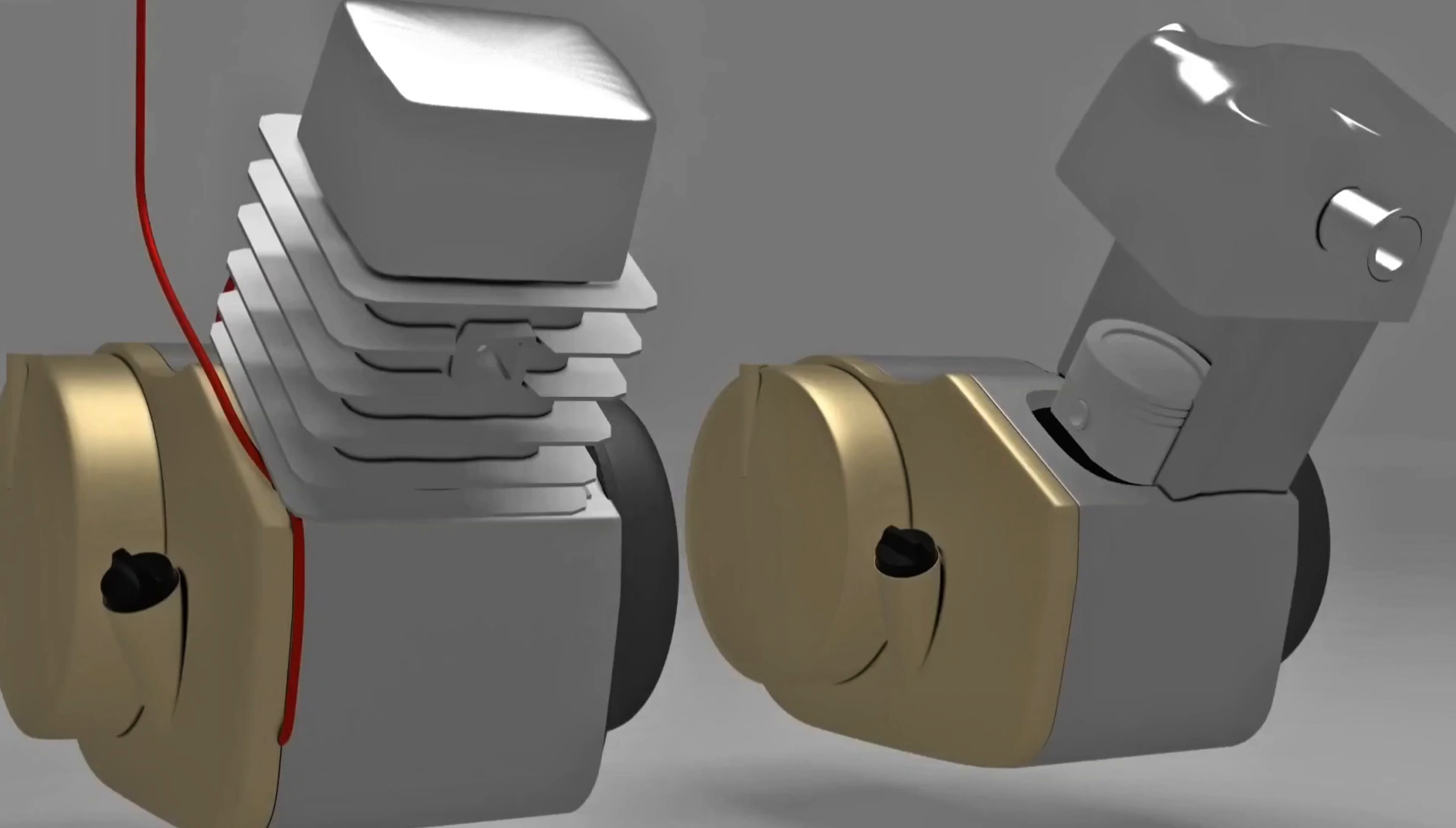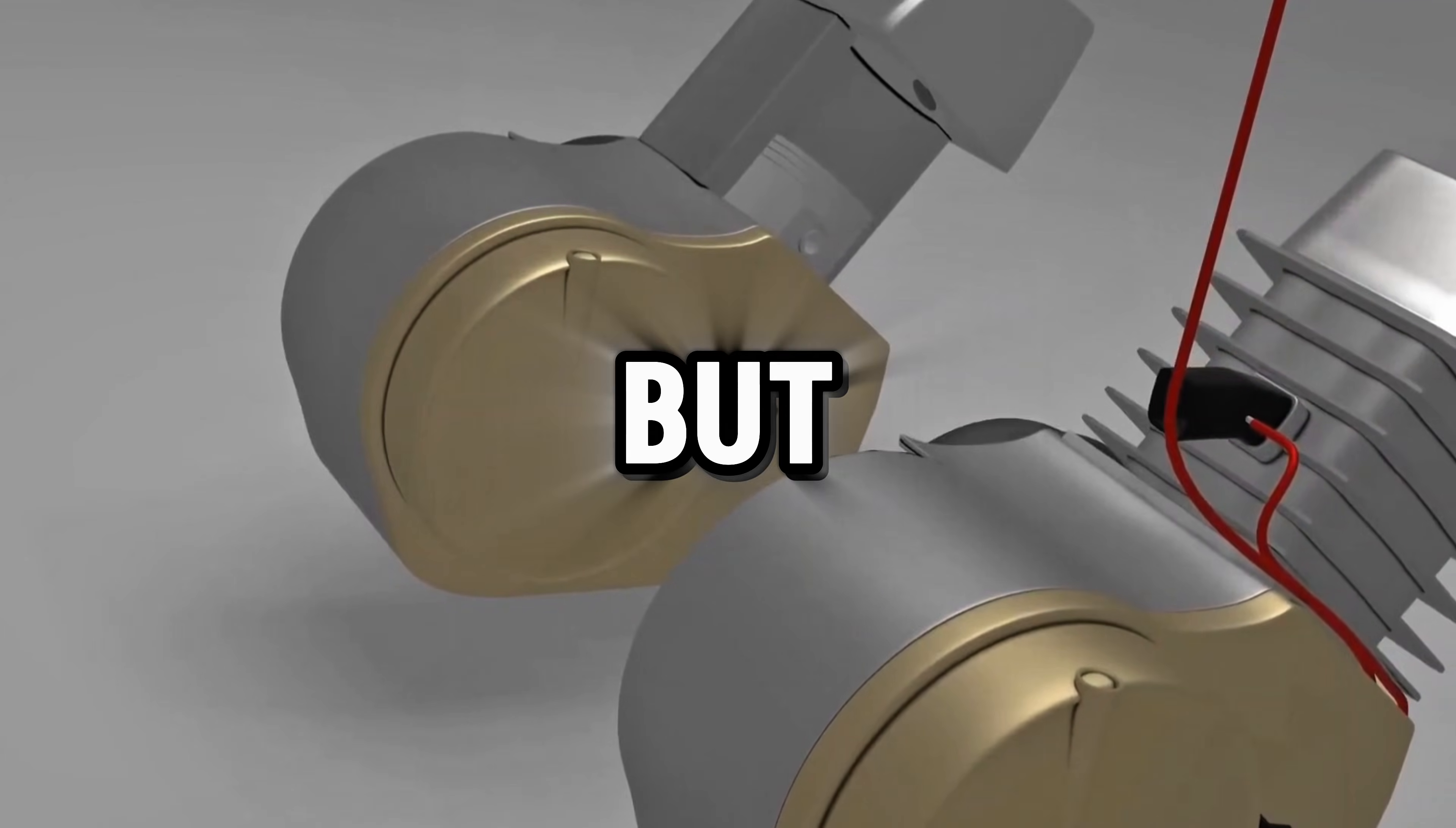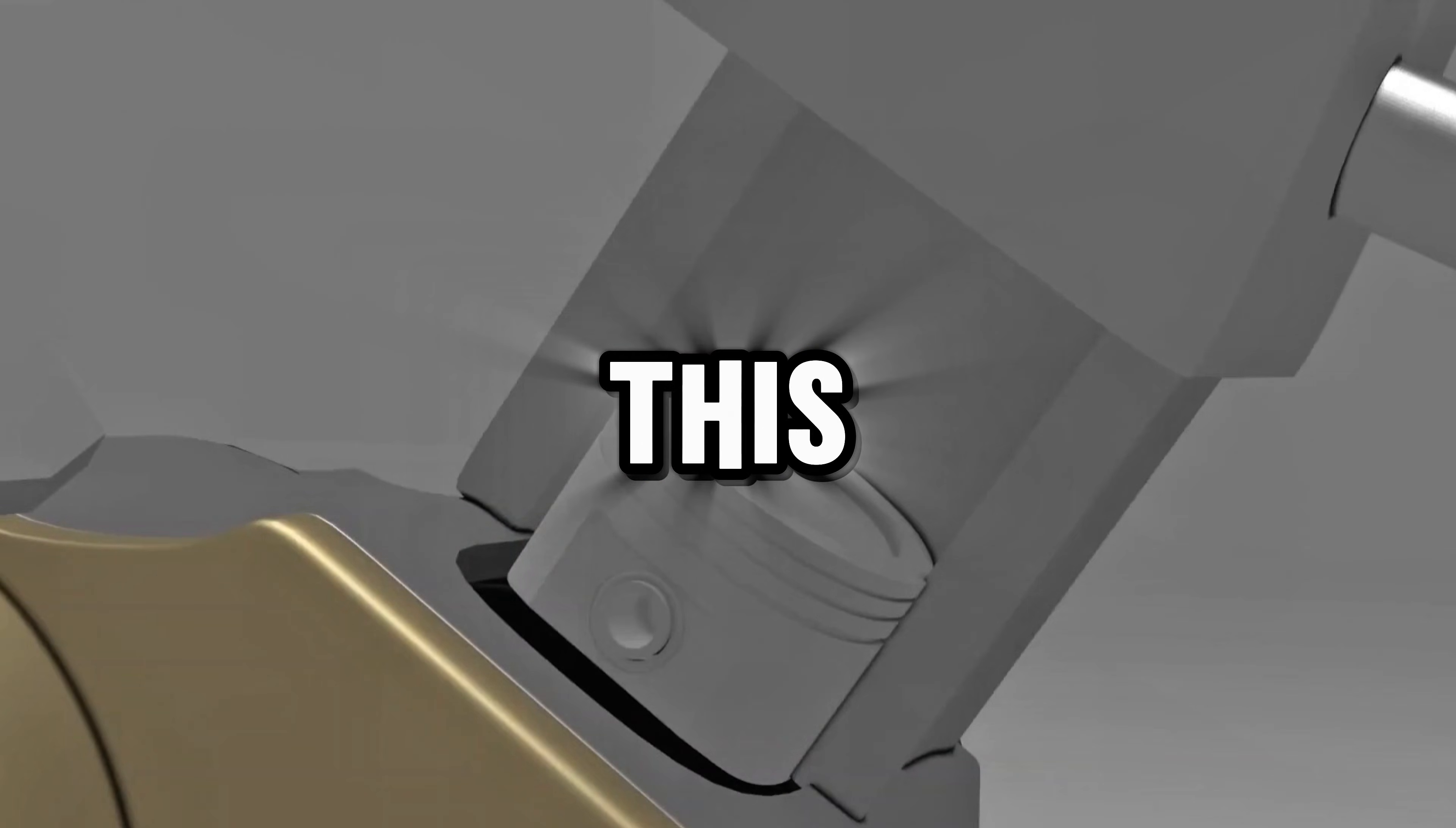Unlike four-stroke engines, which don't have a side oil system, two-stroke engines require it. But why does a two-stroke engine need this special oil?